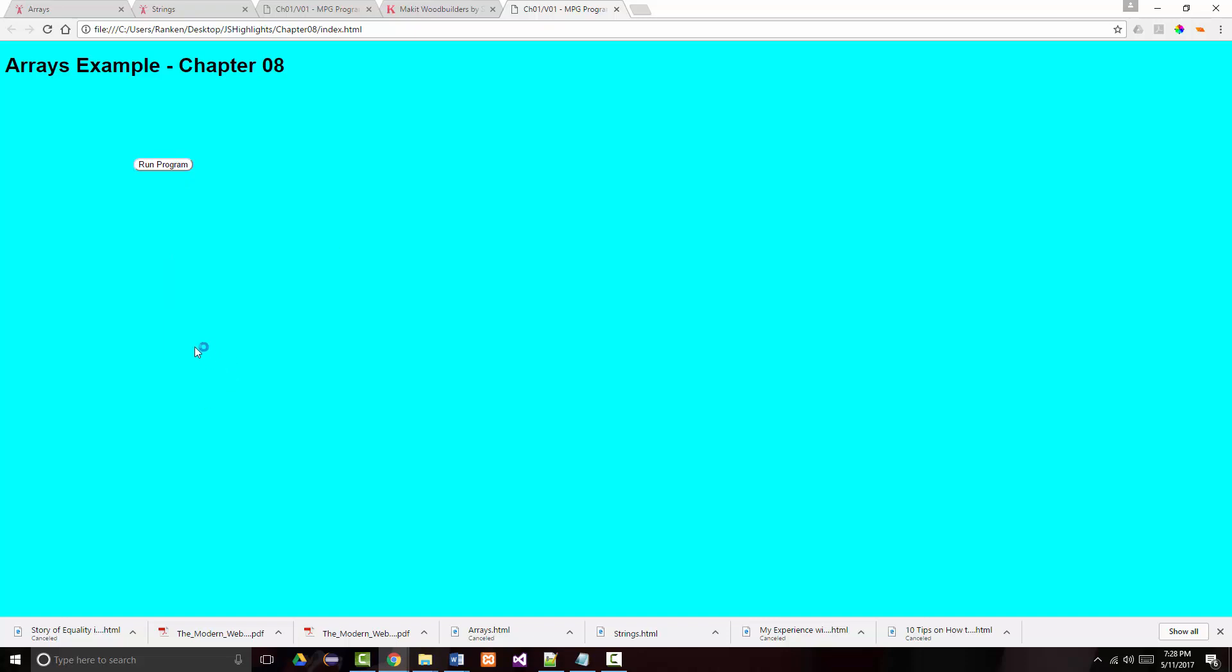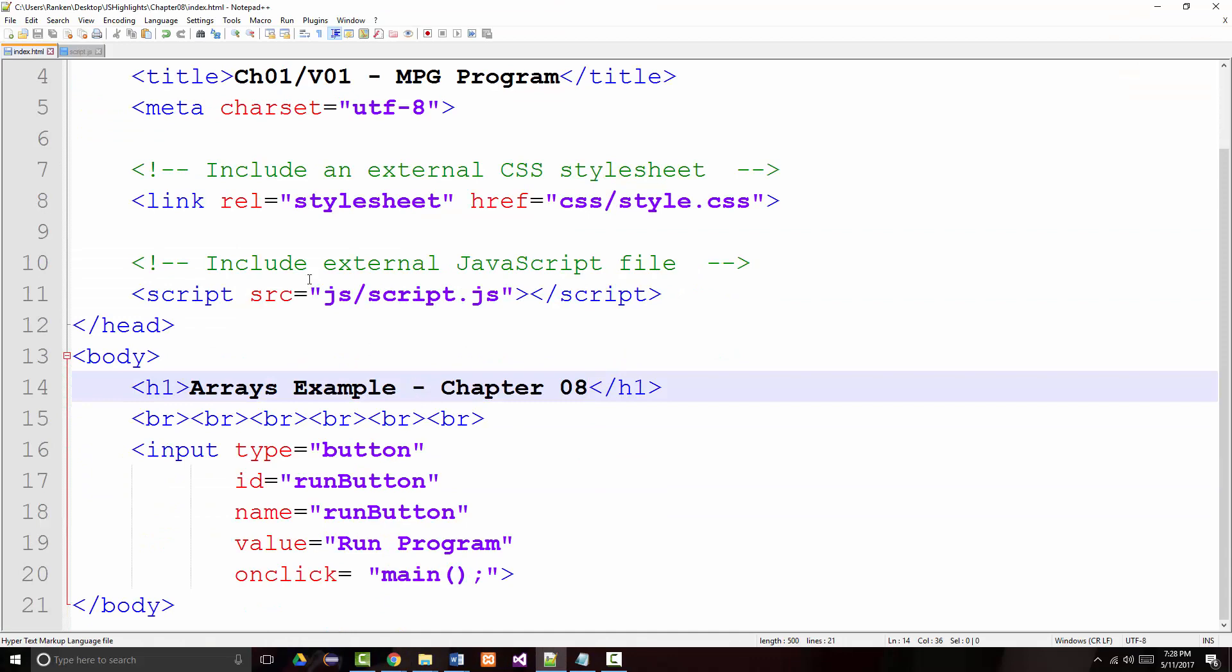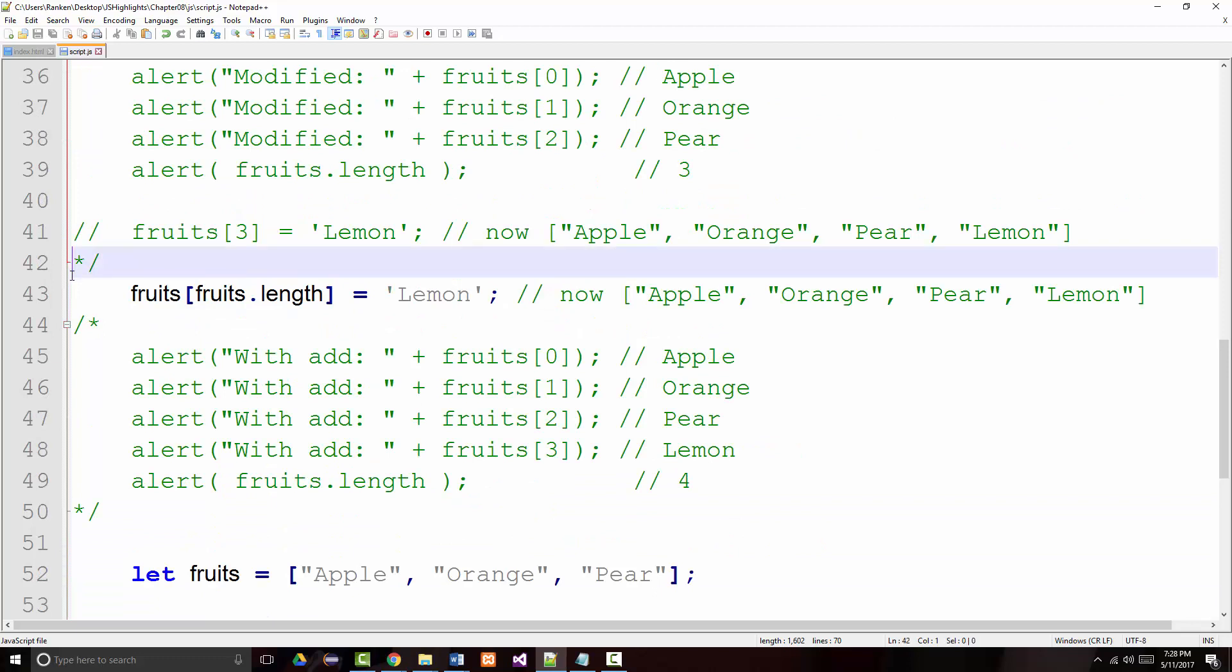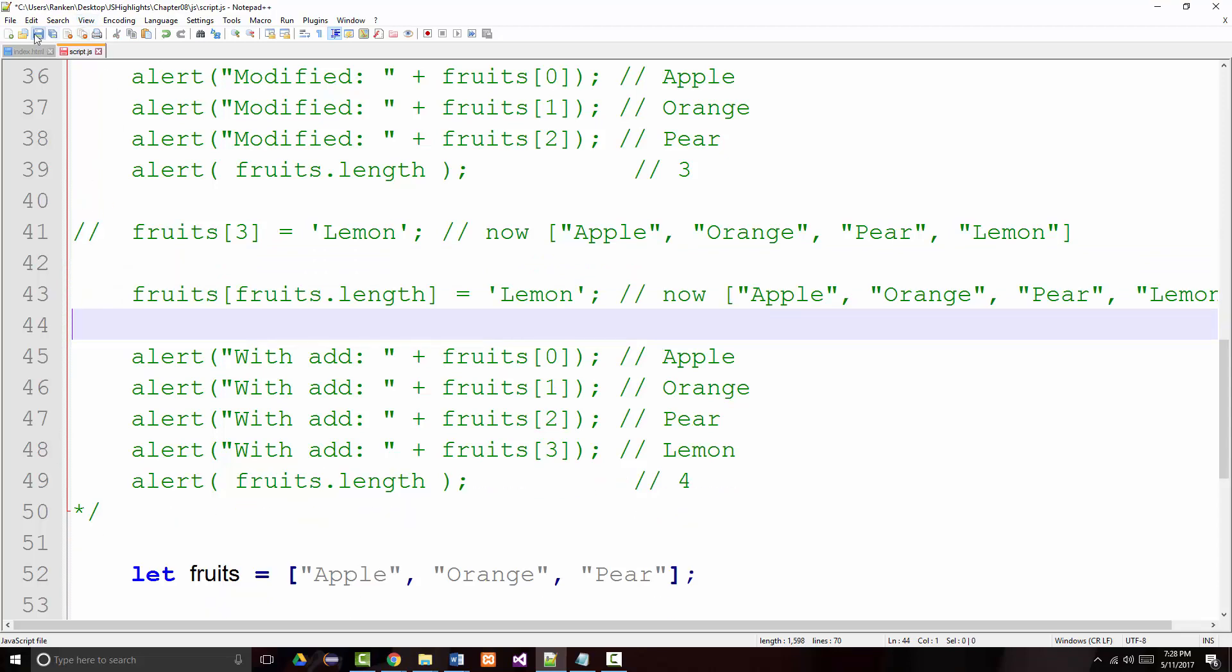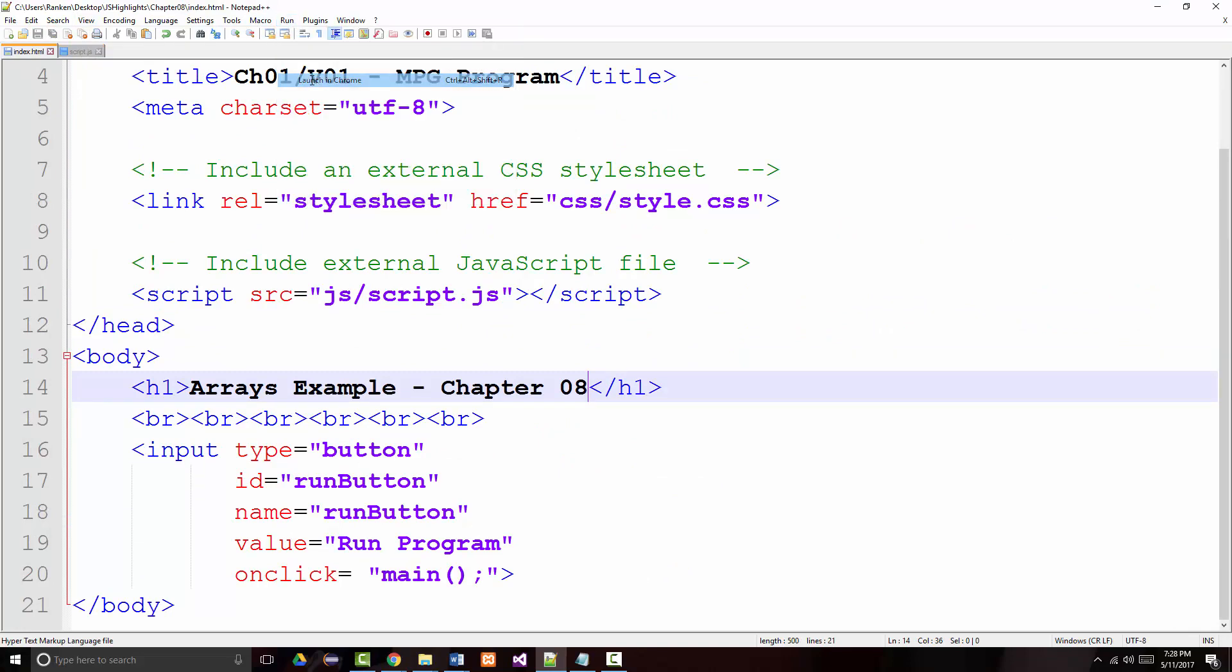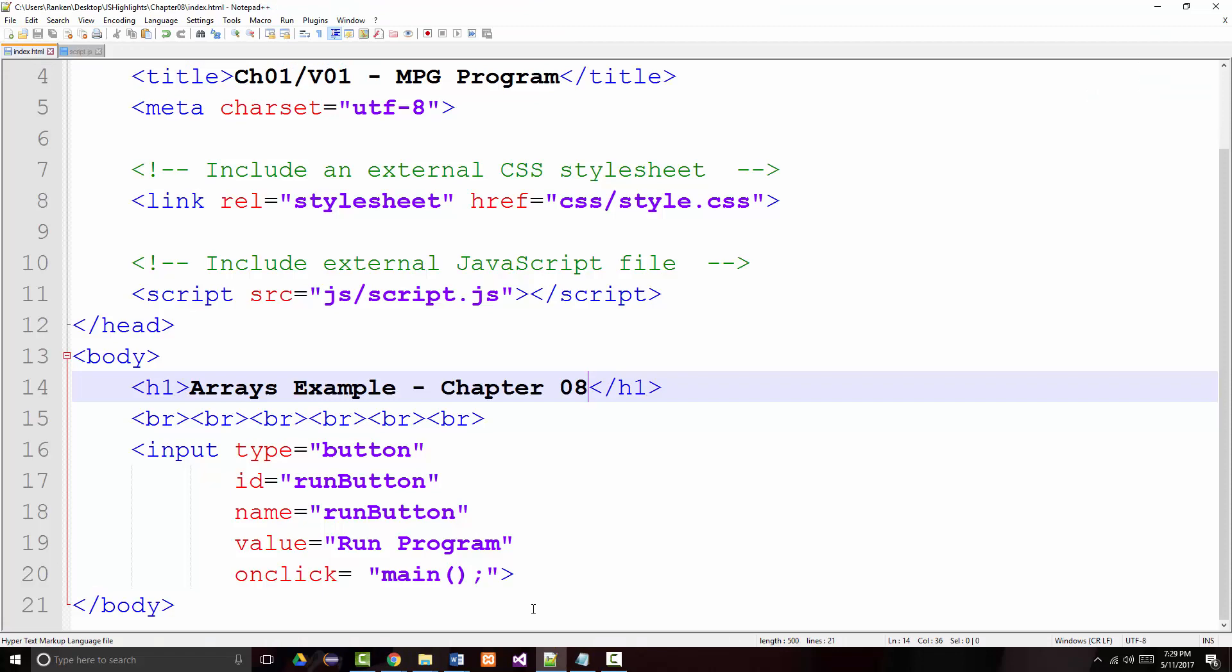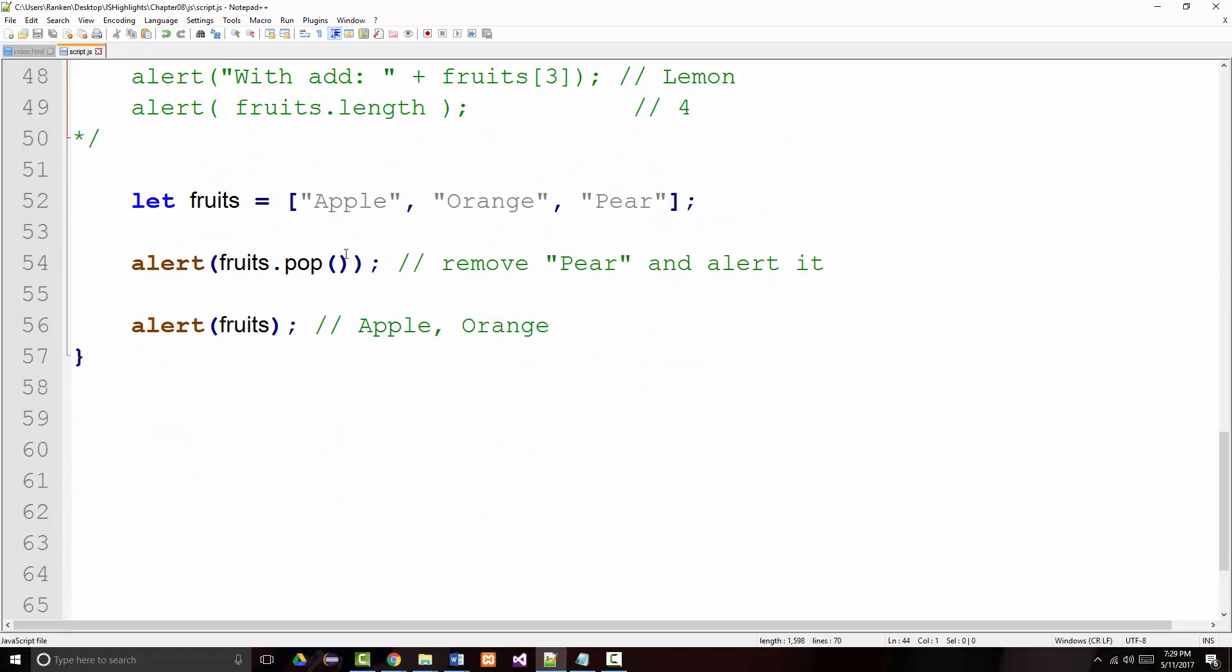It doesn't like something. Line 43. I must still have something that I thought I commented out that I probably did not. There we go. Should be okay now. So the page says pear - that's what we popped off. And apple and orange is what's left. So if we want to remove something from the end of one of these data structures, we use a pop operation. That's also known as dequeuing something, not Dairy Queen but D-E-Q-U-E-U-E, dequeuing something.